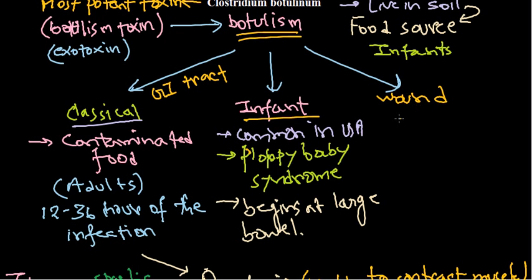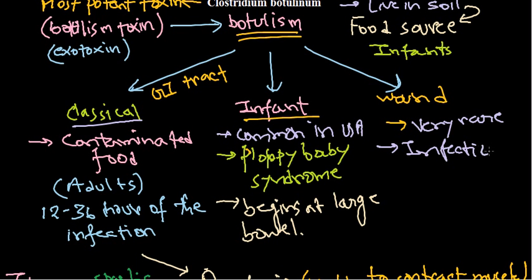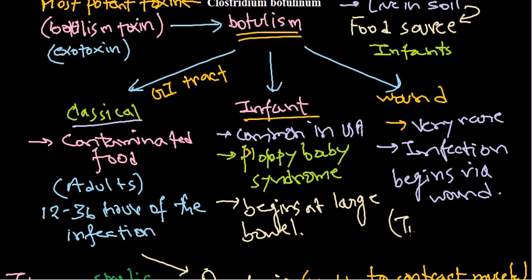The third type is wound botulism, which is a very rare situation. In this case the infection begins via a wound, and again either the bacteria or the toxin entering through the wound can start causing the disease and provide the symptoms.